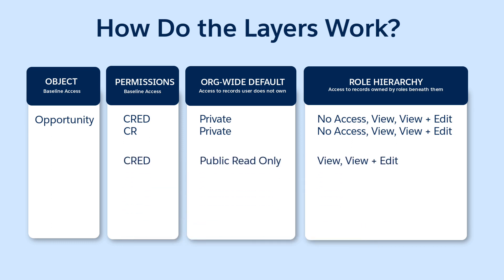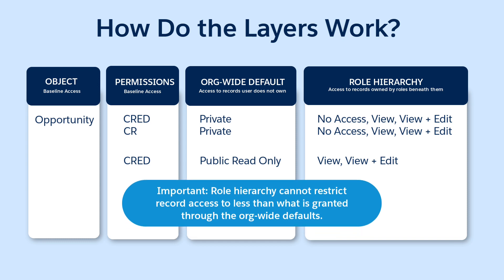If Alan has full Create, Read, Edit, Delete on the Opportunity object, and the org-wide defaults are set to public read-only on Opportunities, Alan can see records owned by other users. And if those owners are below him in the hierarchy, the role settings provide us with two options for opportunities associated with his accounts: View, or View and Edit. The No Access option doesn't appear since the role hierarchy can only open up access to records.